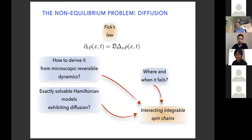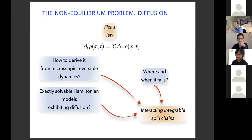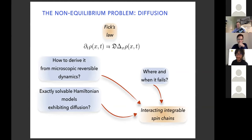Recently, in many fields, there's been an effort to understand how properties of chaotic dynamics relate to the diffusion constant. One motivation is understanding the emergence of this irreversible law from microscopic reversible dynamics. It's not easy to find exactly solvable systems that give you normal diffusive dynamics — for example, free systems usually show ballistic transport. It's also interesting to know when diffusion fails and you have anomalous behavior.